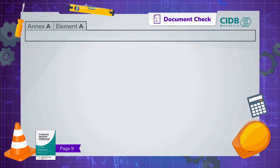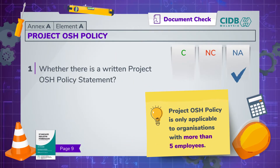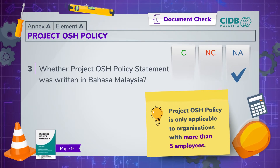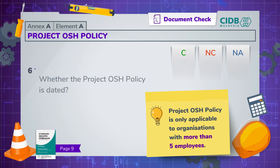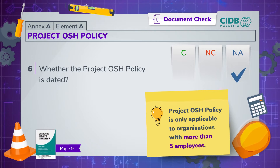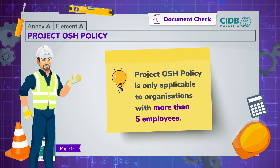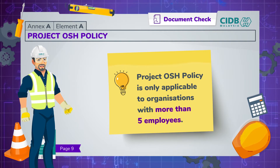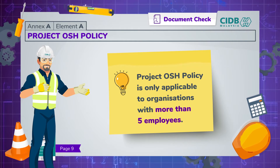First in the list, element A: project OSH policy. If the organisation has not more than five employees, just mark all items in this element as not applicable. Easy, isn't it? But remember, mark all items under element A as not applicable only when the project has not more than five employees.